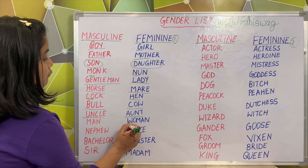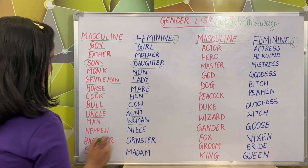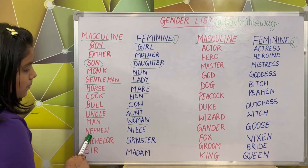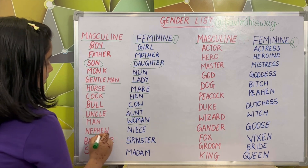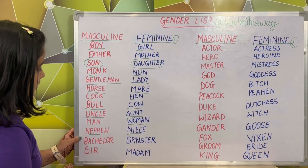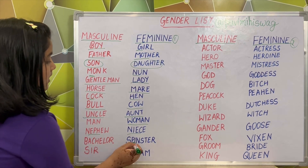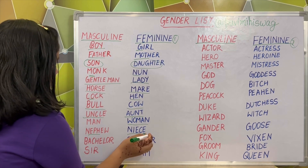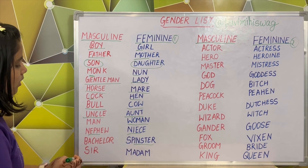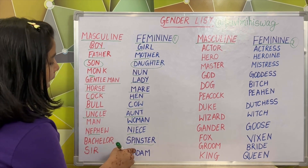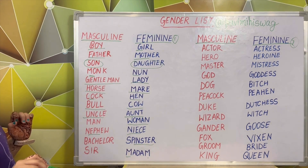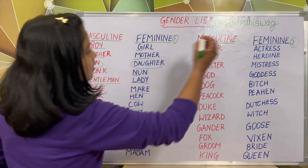Man — woman. Nephew — niece. Bachelor — spinster. Sir — madam. Let's move to the next page.